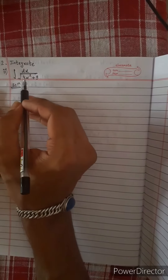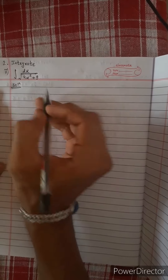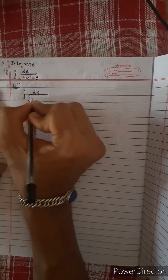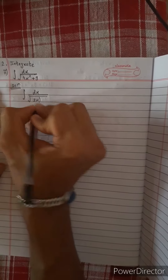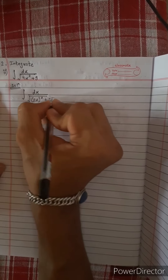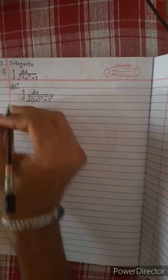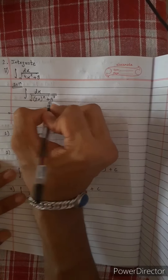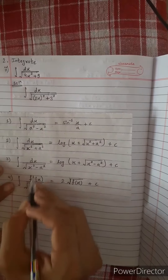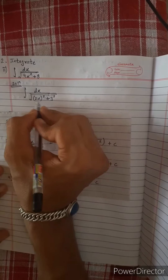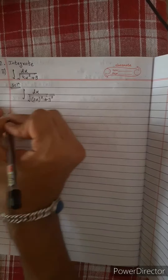We have to find the integral dx over the square root of 2x squared plus 9 squared. We are given this formula, and we have to apply it. The expression involves 2x in the numerator region, and 2x squared plus 9 squared under the root.